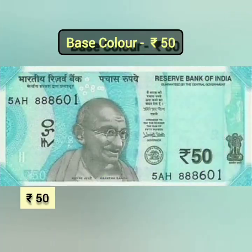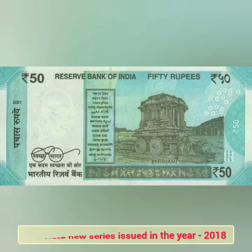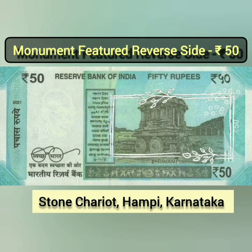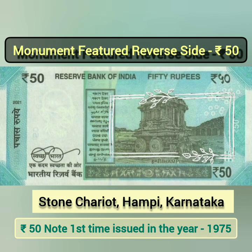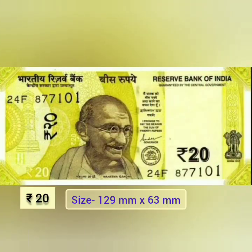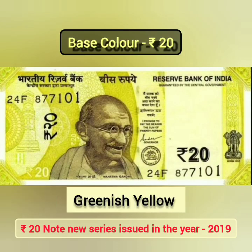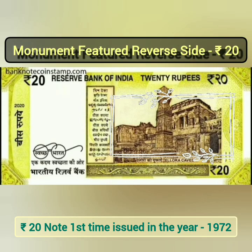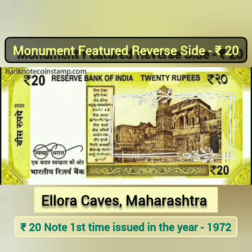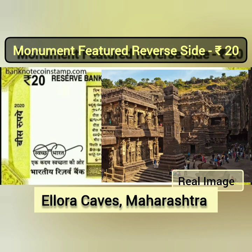This is a 50 rupee note. Its base colour is cyan. The reverse side features a depiction of the stone chariot Hampi located in Karnataka. This is a 20 rupee note. Its base colour is greenish yellow. The reverse side features a depiction of the Ellora Caves located in Maharashtra.